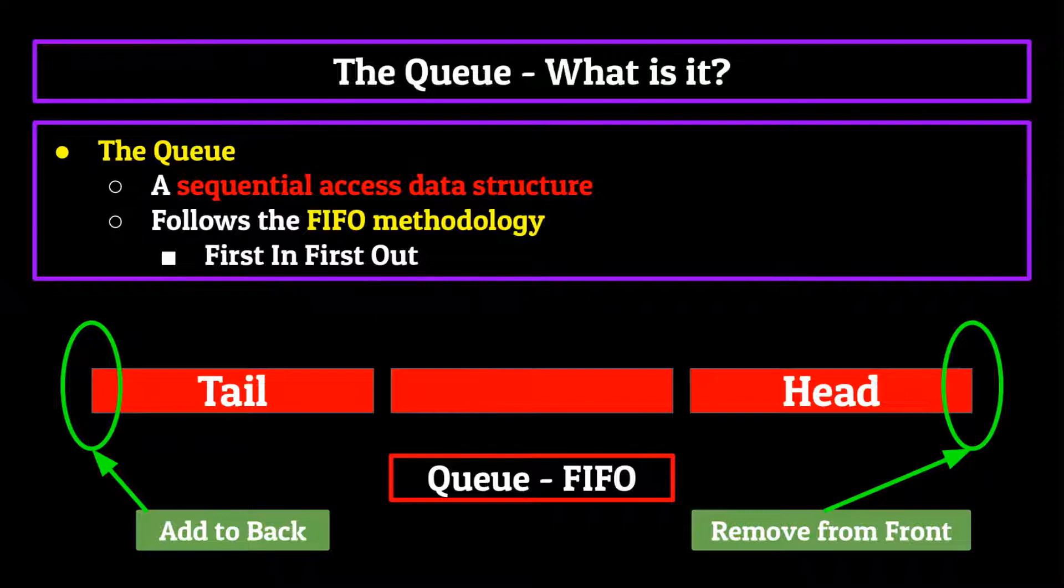So there's your background information on the queue. Sequential access, FIFO methodology, add elements to the back and remove them from the front. Got it? Okay.